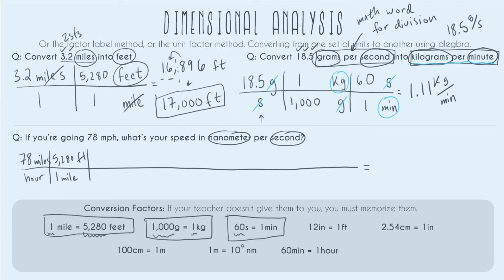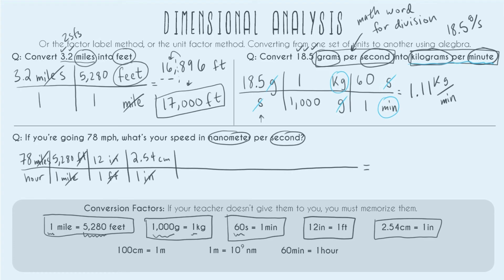Next, we keep going with length. The only conversion we have with feet is 12 inches equals 1 foot, so we write foot in the denominator and inches on the numerator with 1 and 12. Continuing toward nanometers, we next relate centimeters and inches: inches on the bottom, centimeters on top — it's 2.54 centimeters and 1 inch. Then we go from centimeters to meters using 100 cm equals 1 meter: cm in the bottom, meters on top, with 100 next to centimeters and 1 next to meter.